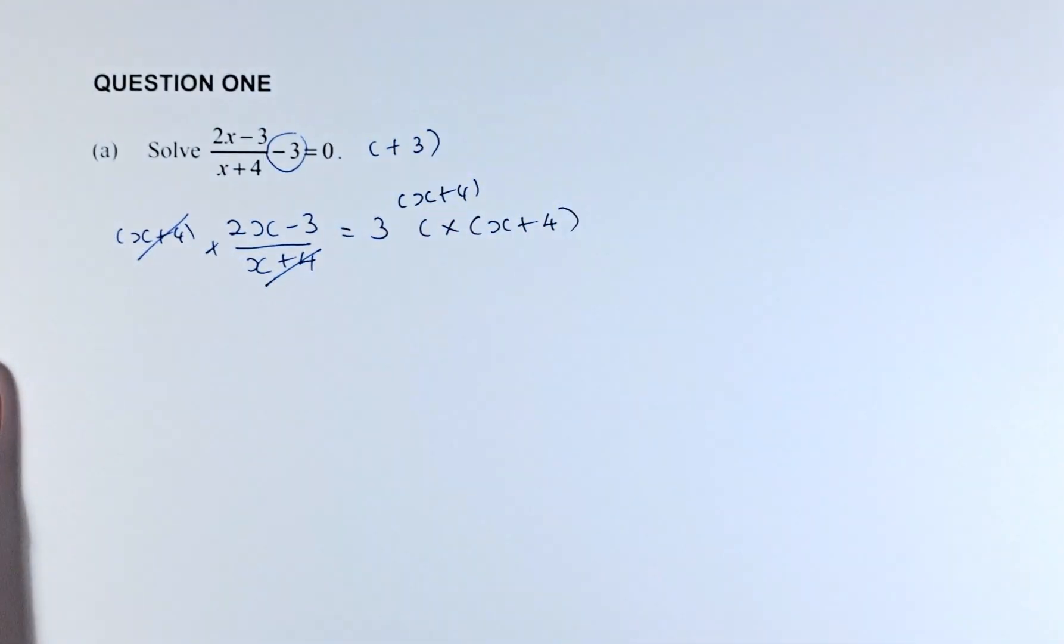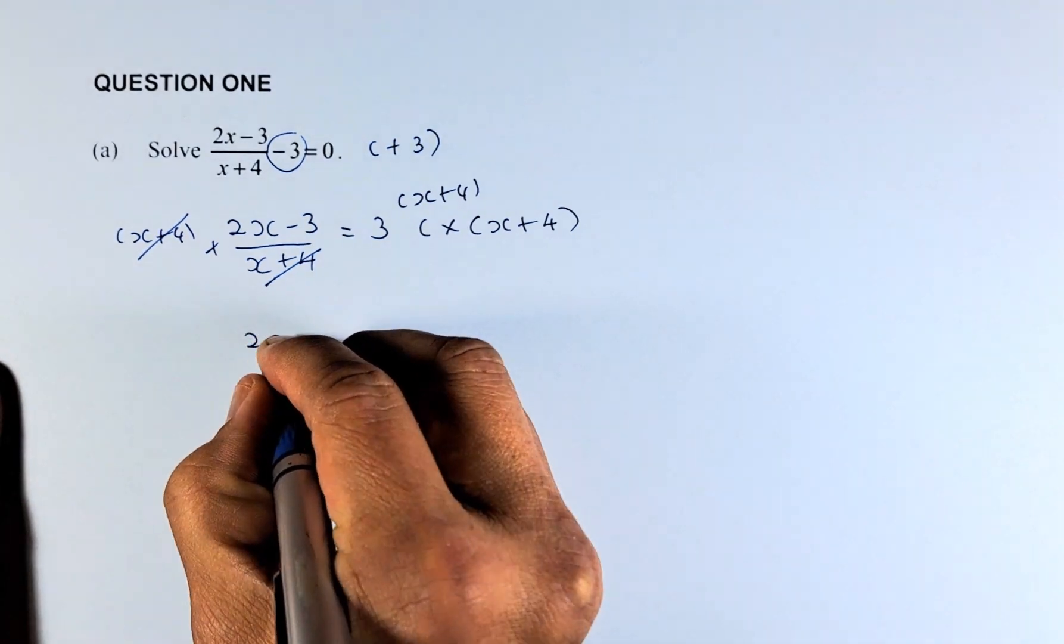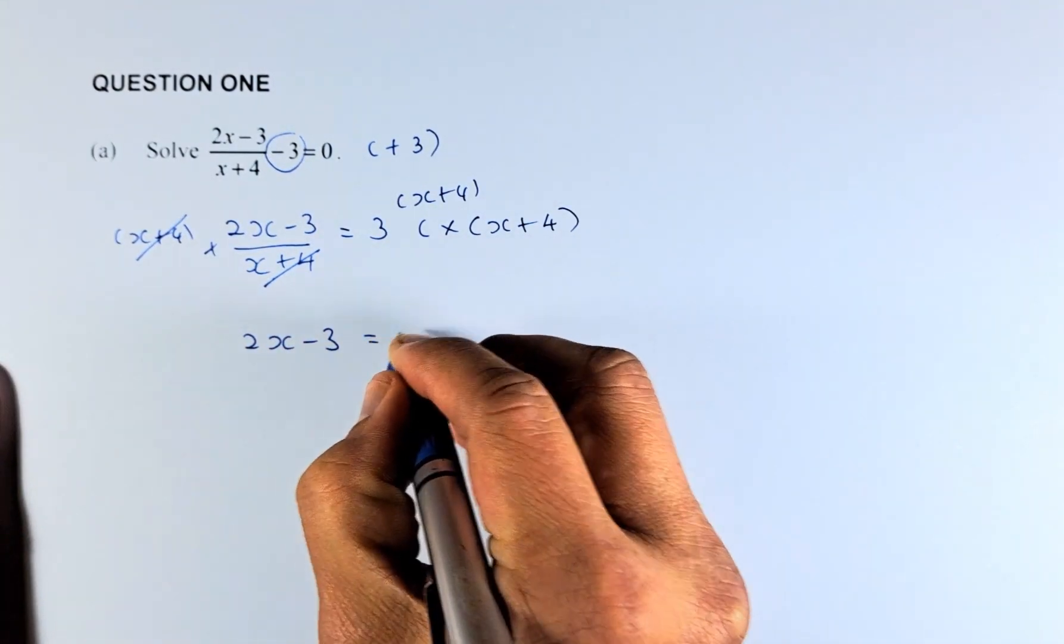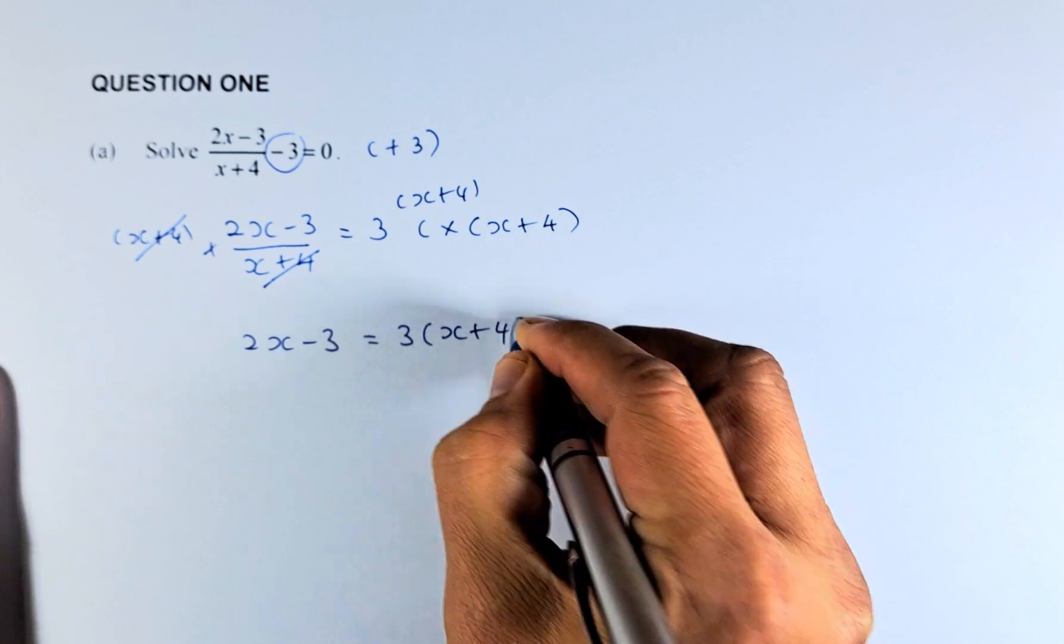This x + 4 will cancel out. So what's left is going to be 2x - 3 = 3(x + 4).